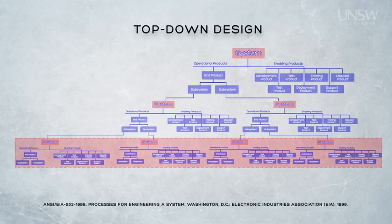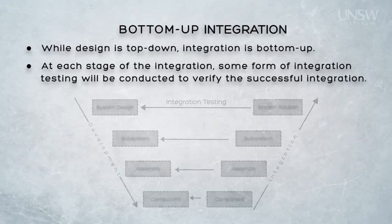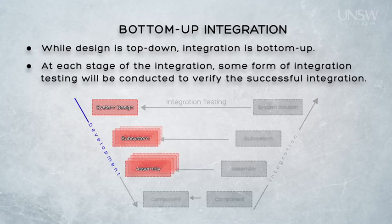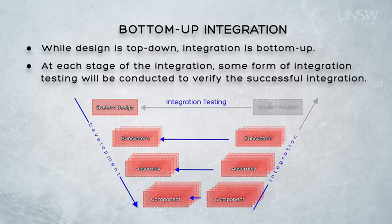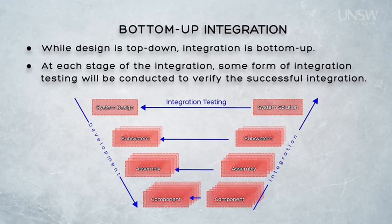The flip side of top-down design is bottom-up integration. We can see here another representation of top-down design on the left-hand side of the diagram. The system is decomposed from a system into subsystems, subsystems decomposed into assemblies, assemblies decomposed into components — and that's the development. On the right-hand side of the diagram, we have the flip side of top-down design, which is the bottom-up integration. Components are built, tested, and then integrated into assemblies. The assemblies are then tested and integrated into subsystems, which are then tested and integrated into the final system. The system is then finally tested for its desired system properties, and so we've completed that cycle of top-down development and bottom-up integration.